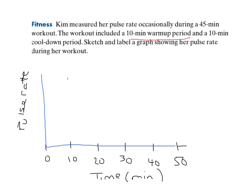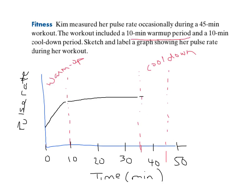We have a 10-minute warm-up period, so usually pulse rate will start relatively low — not necessarily at zero, but it'll start low. Then the 10 minutes would be the warm-up, then the exercising, and then the last 10 minutes is going to be the cool-down, where we're going to hopefully return back to regular state. So pulse rate will begin low, increase during the warm-up, stay fairly constant during exercise, and during the cool-down hopefully return to about where it started.